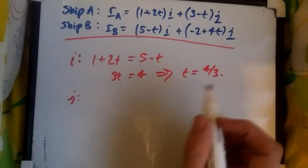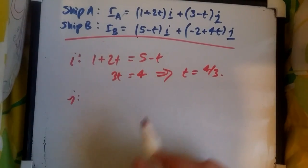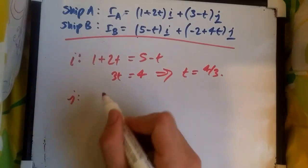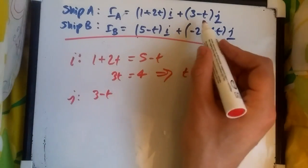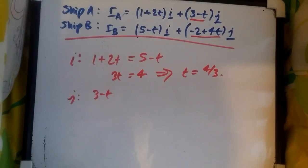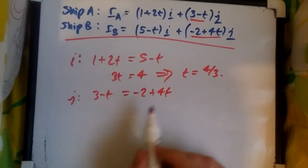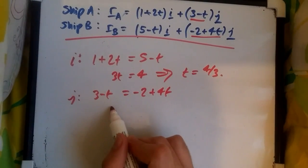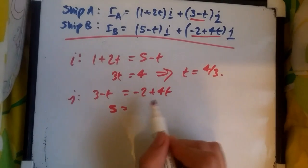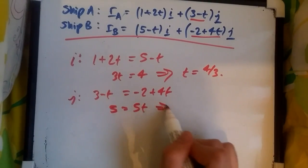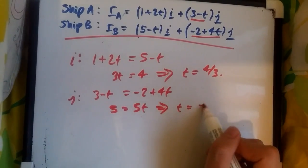Now let's see if we get the same value for j. Let's match the j components which is 3-t and -2+4t. Once again doing the same process, adding 2 across we get 5 = 5t, and hence dividing by 5, t gives us exactly 1.